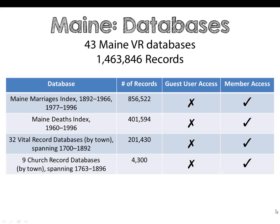On AmericanAncestors, we have over 43 vital record databases containing over 1.4 million records for Maine. This includes the Maine Marriage Index, 1892 to 1966 and 1977 to 1996, with over 856,000 records. The Maine Death Index of 1960 to 1996 includes 400,000 records itself. We also have 32 vital record databases and 9 church record databases, which are town-specific, including over 200,000 records.